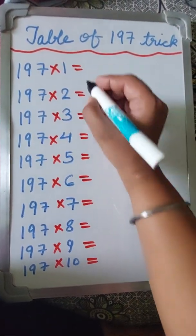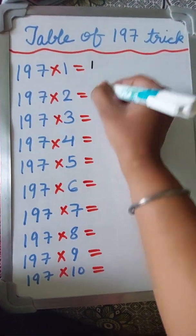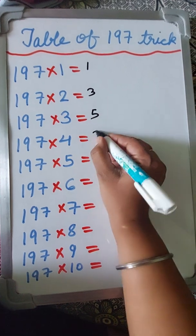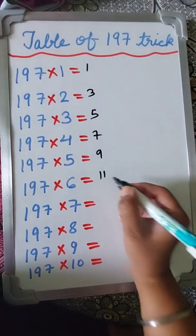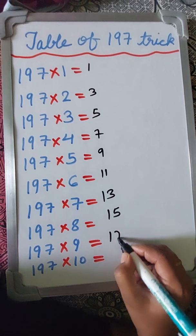Table of 197 trick. First, you can write the odd numbers: 1, 3, 5, 7, 9, 11, 13, 15, 17